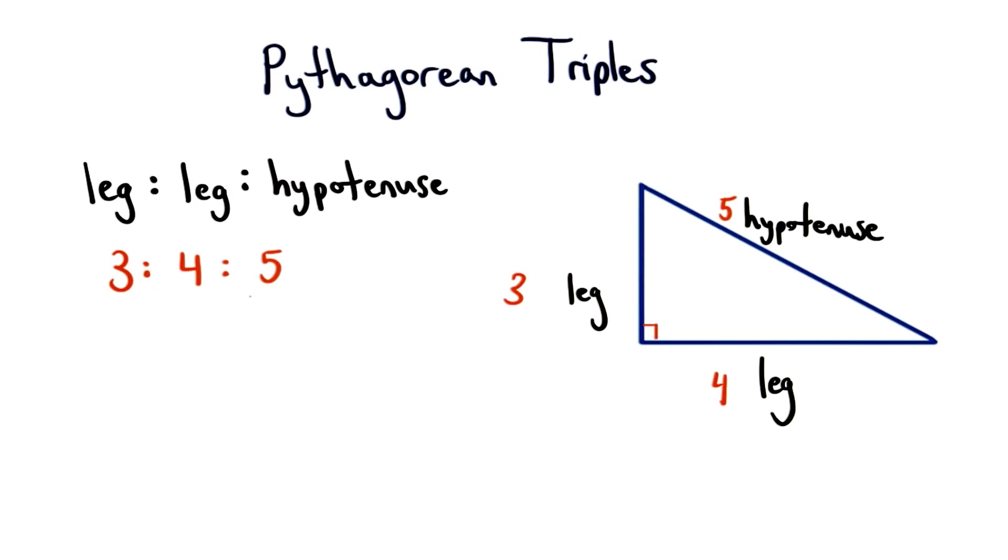There are some special right triangles that can help us problem solve even more quickly than using the Pythagorean theorem. If you were able to solve the last problem without using the Pythagorean theorem, then great work. If you didn't, I would go back and check that solution. See how we can do it.